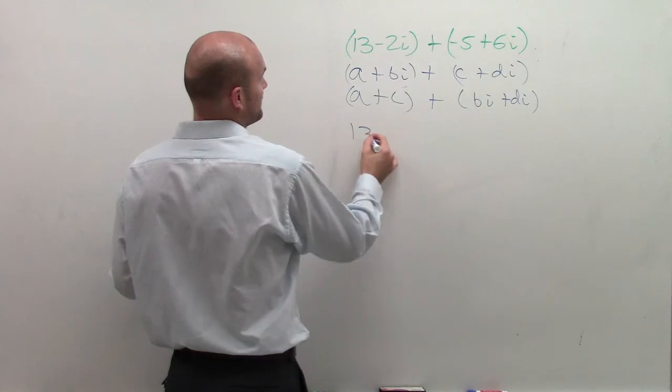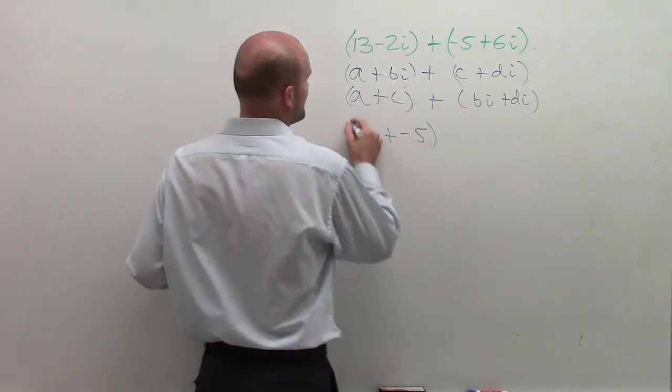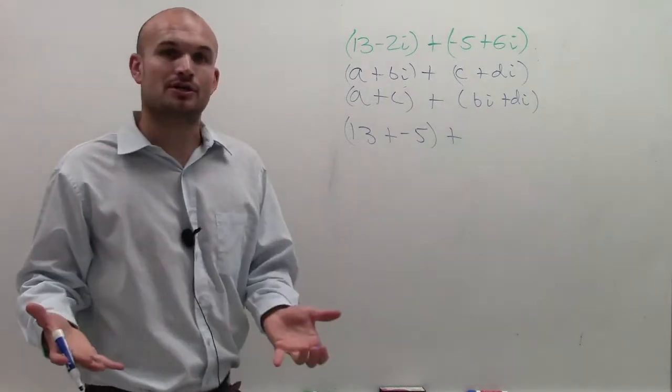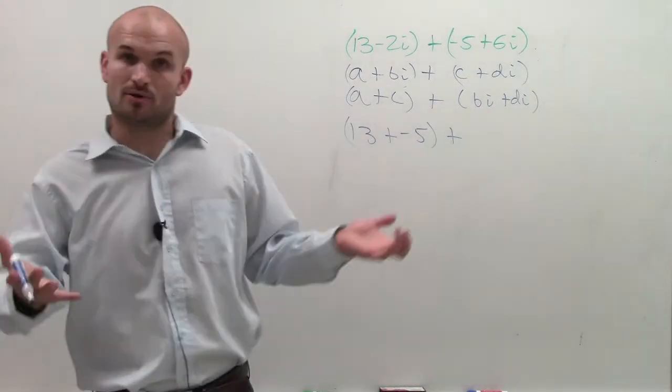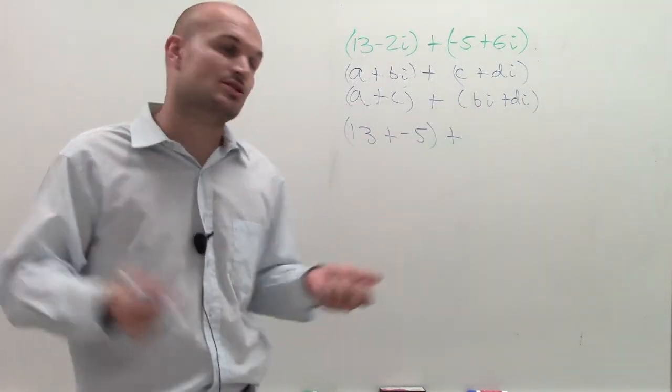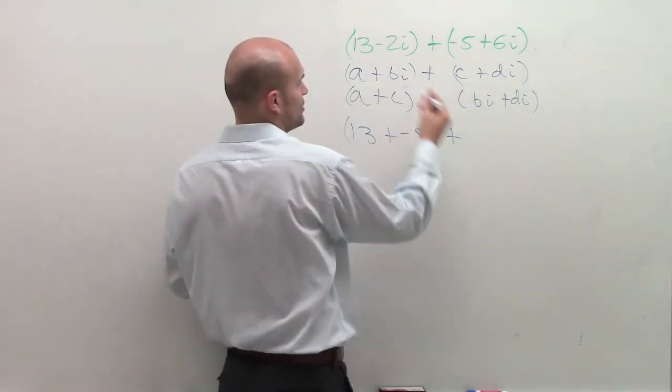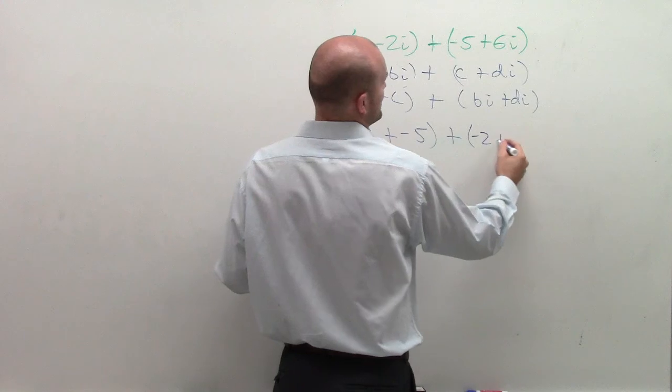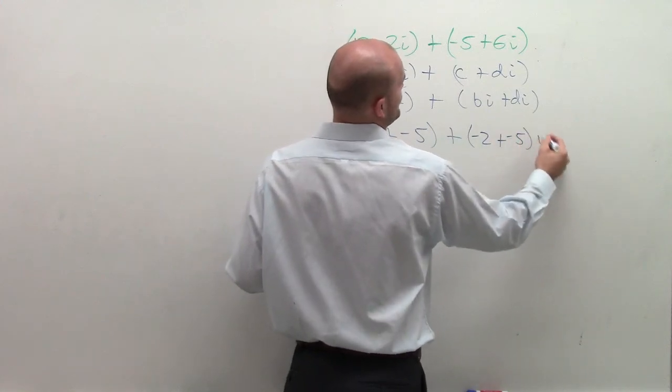So on this problem, I'm going to have 13 plus negative 5 plus, I can't add my i's because that's like your variable, right? x plus x would be 2x. So you take your coefficients, and this one, I'm going to have negative 2 plus a negative 5 times i.